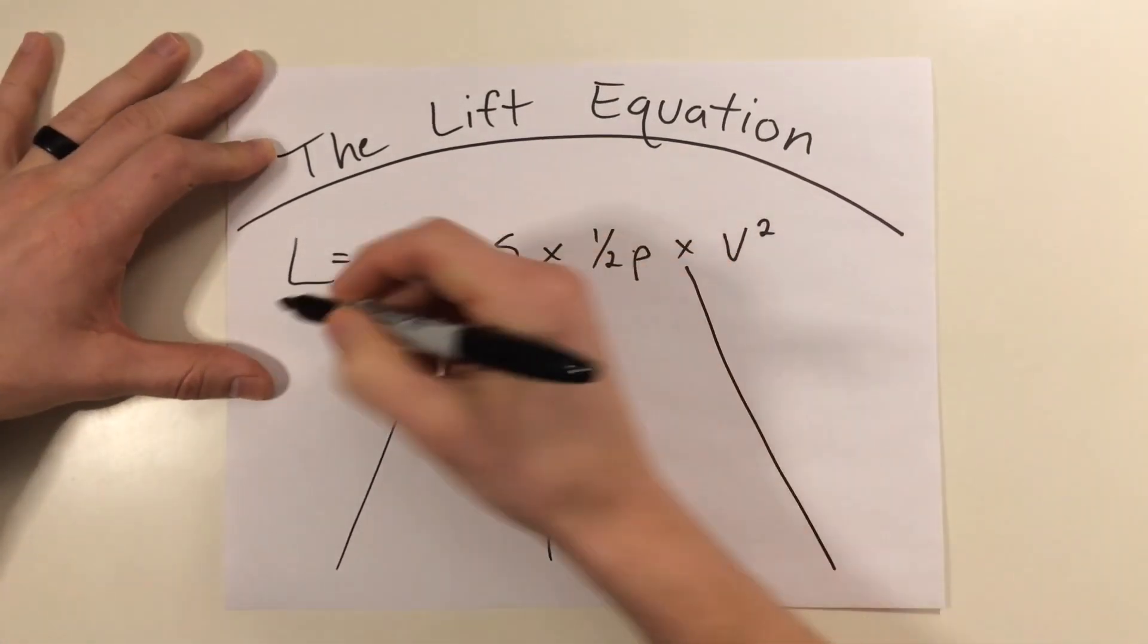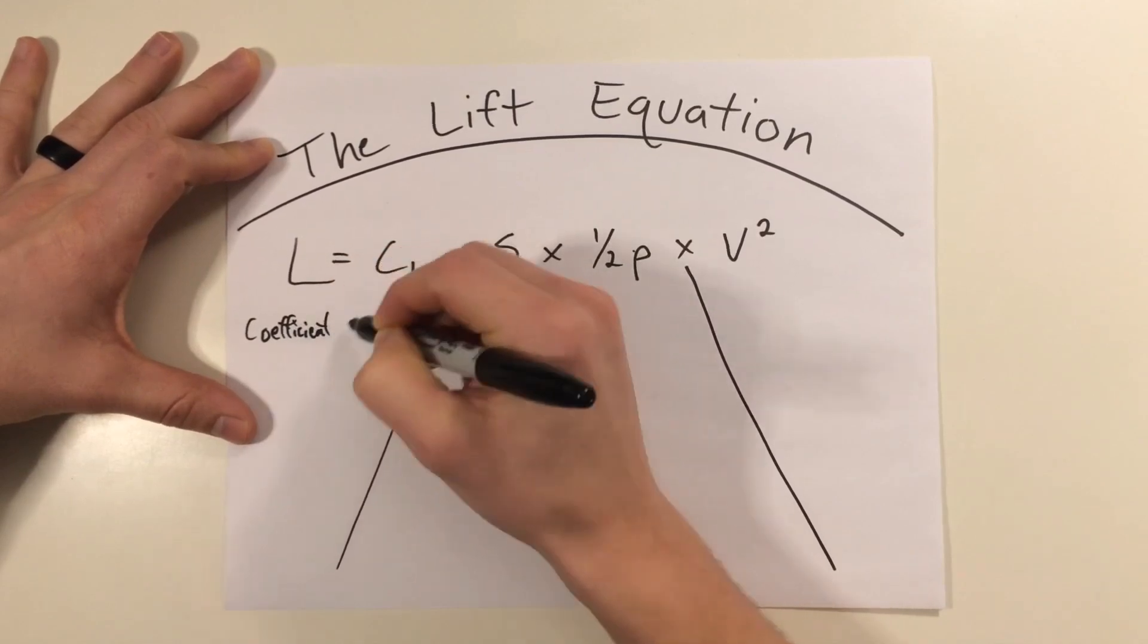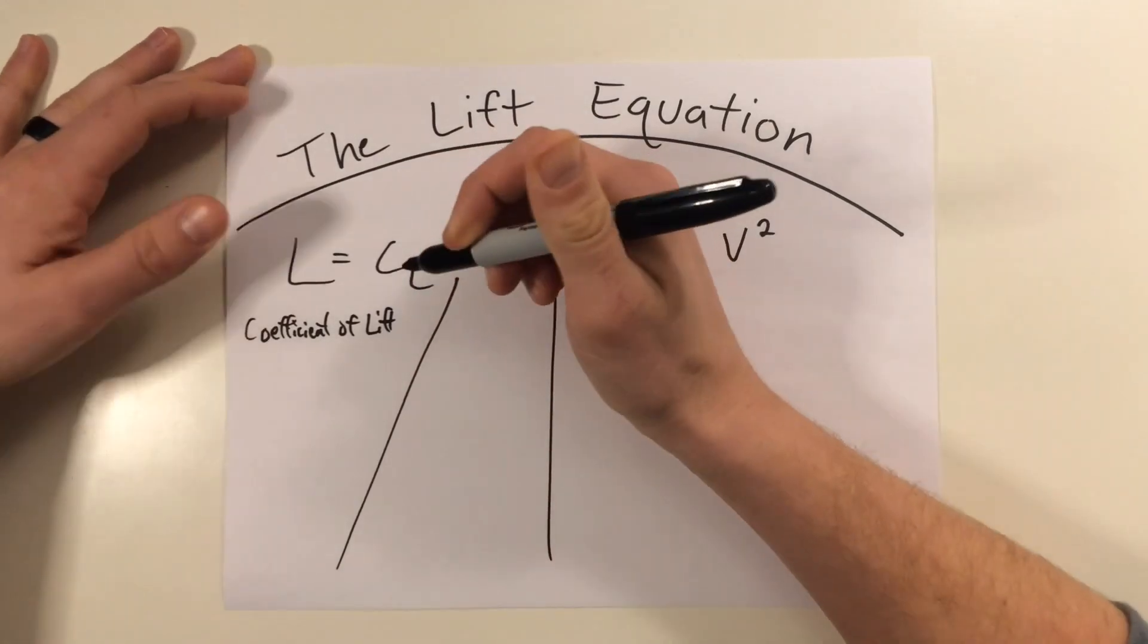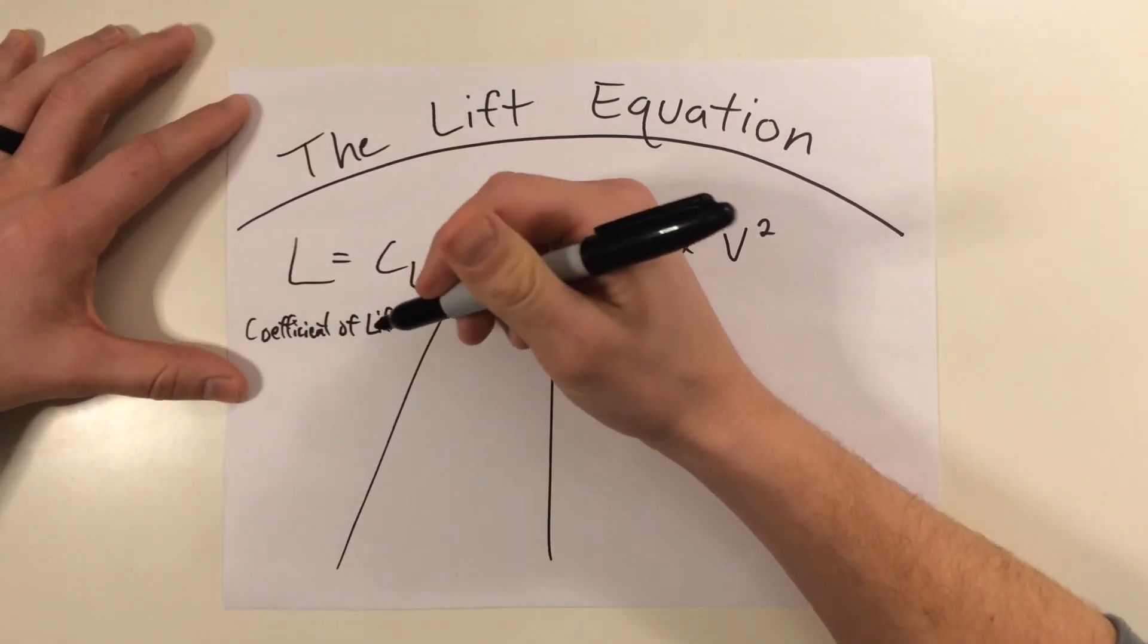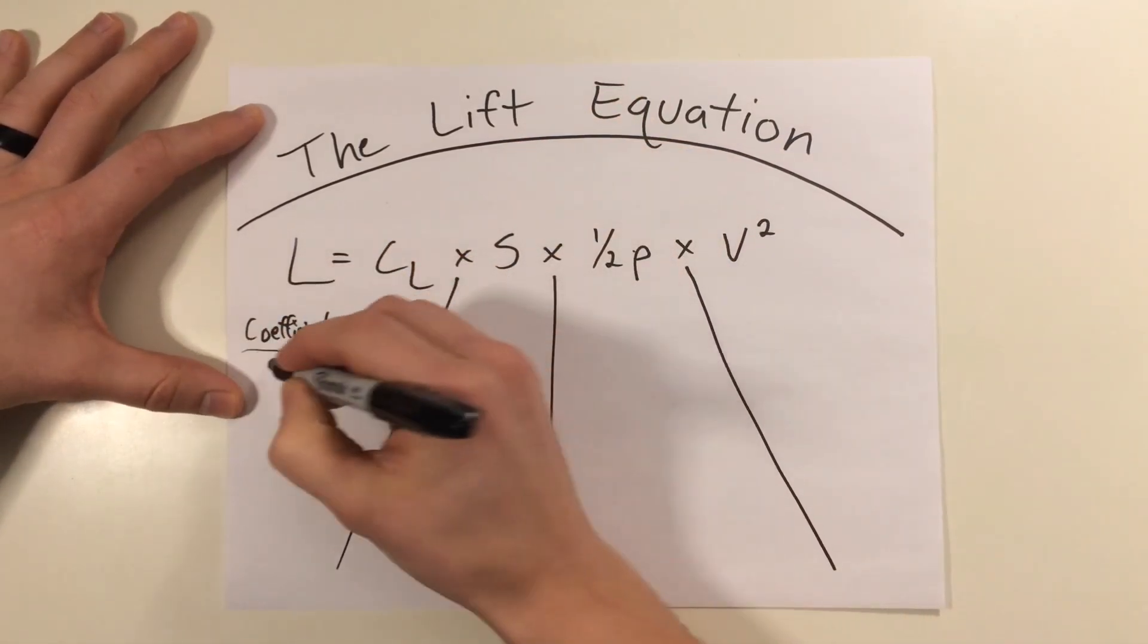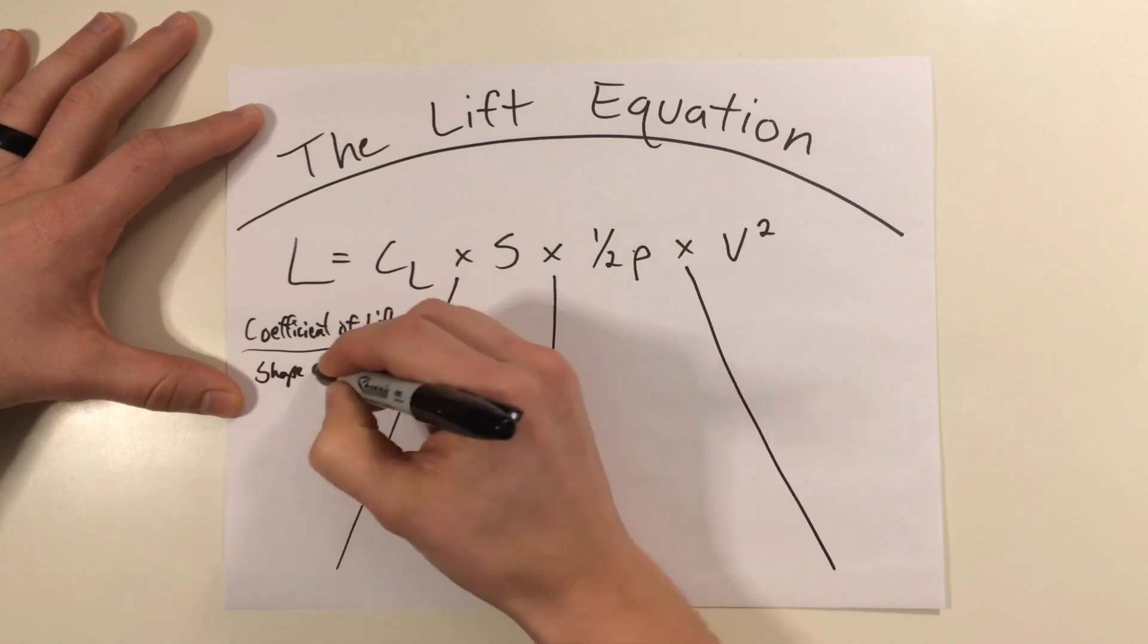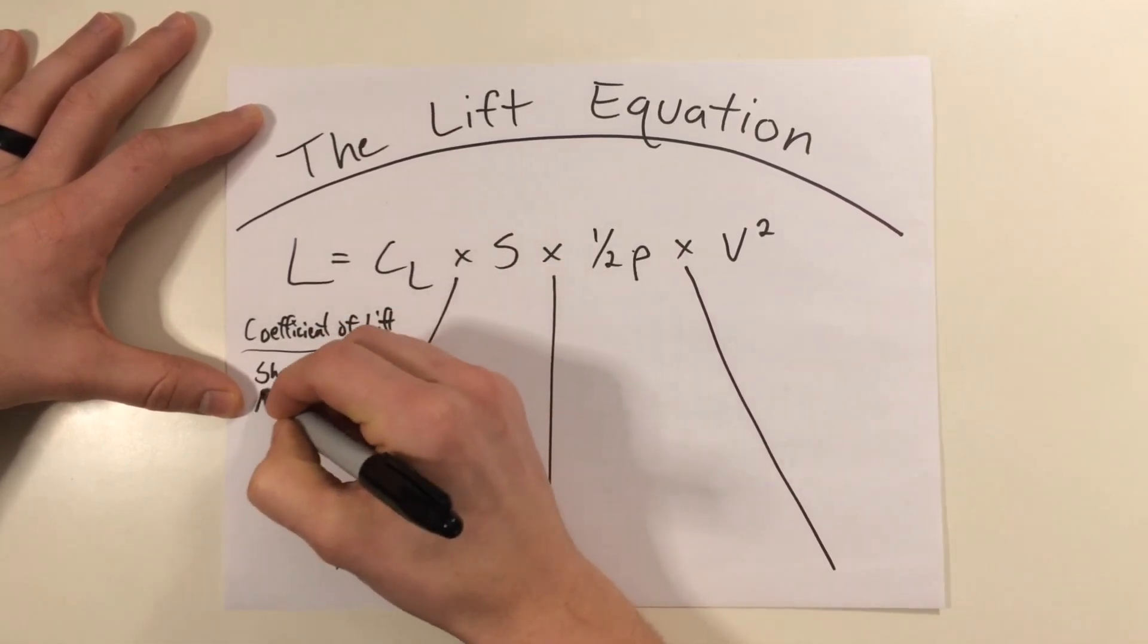The first part is going to be coefficient of lift. Now, coefficient of lift is a measure of the amount of lift a particular airfoil shape can produce. This is going to be determined by things like the shape of an airfoil, in conjunction with its angle of attack.